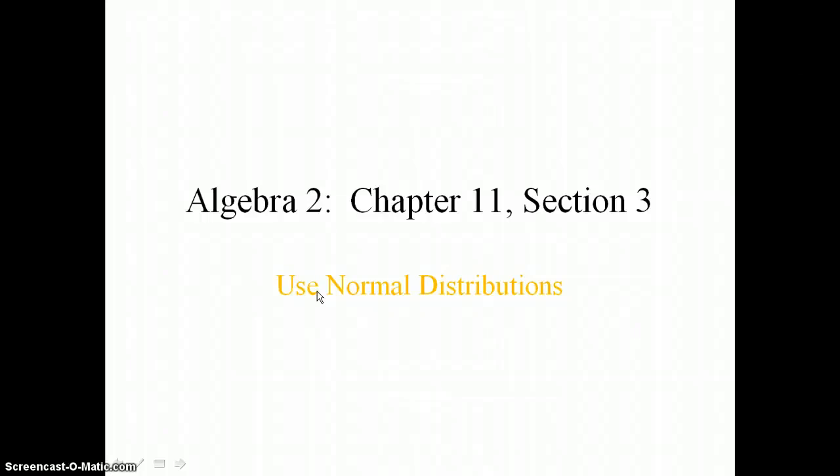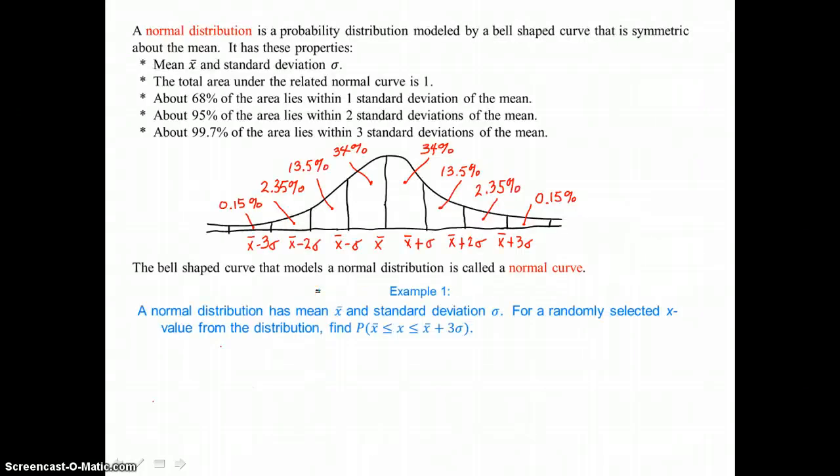In lesson 11.3, you will use normal distributions. A normal distribution is a probability distribution modeled by a bell-shaped curve that is symmetric about the mean. It has these properties: a mean of X bar and a standard deviation of sigma.